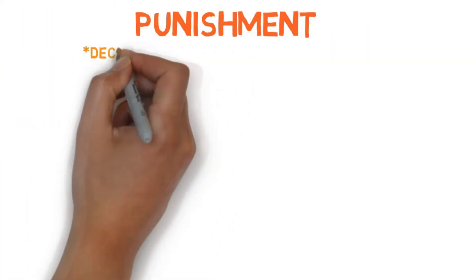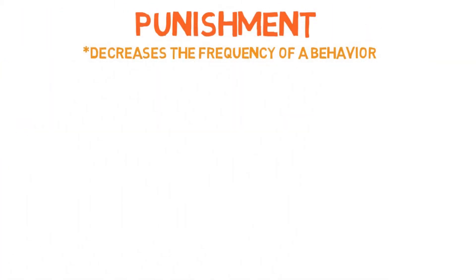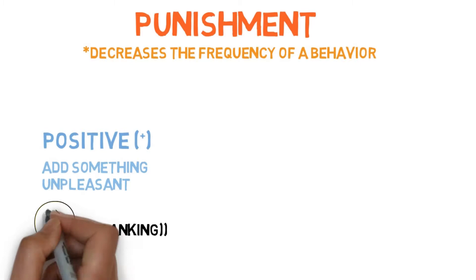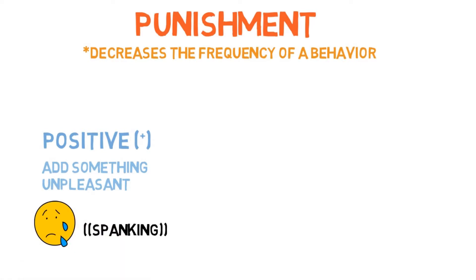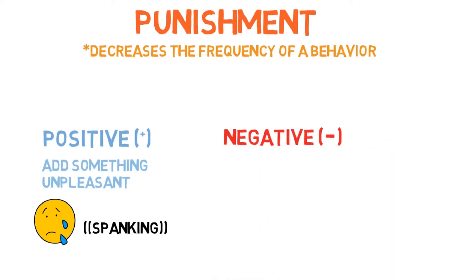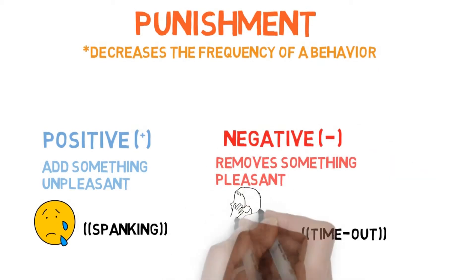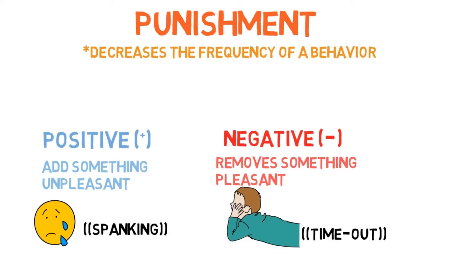Punishments are aimed at decreasing a behavior. A positive punishment is a punishment that adds an aversive stimulus to prevent the behavior again. This is a common one — so a parent spanks their child, or after eating spoiled food you get sick. A negative punishment is a punishment that takes away a pleasurable stimulus. So a kid might act out and you could take away his games or time with friends. In both cases an enjoyable activity is removed.